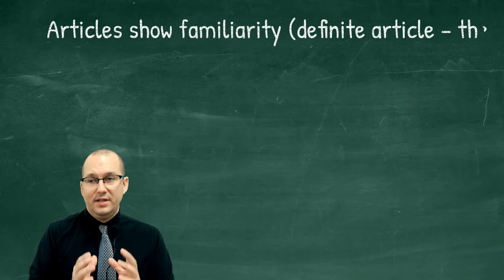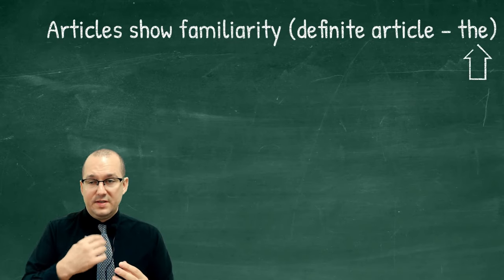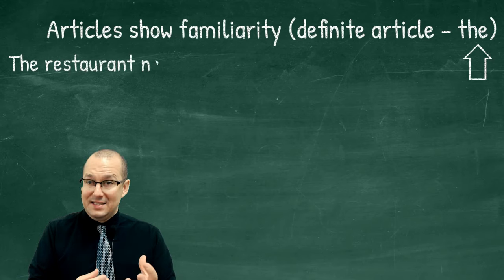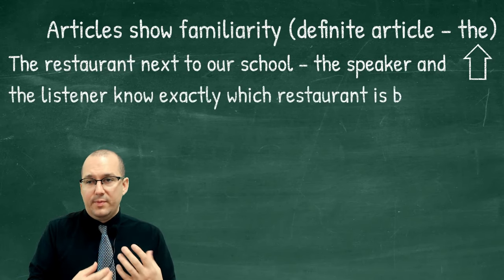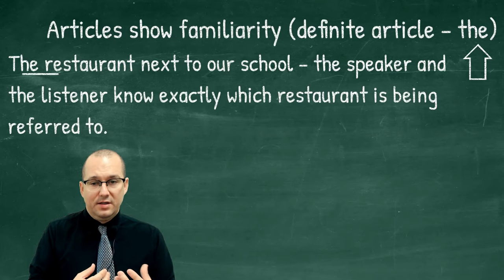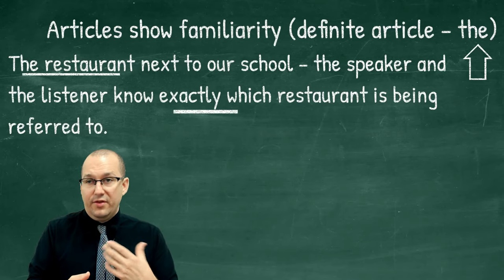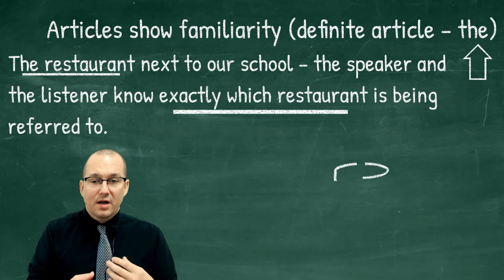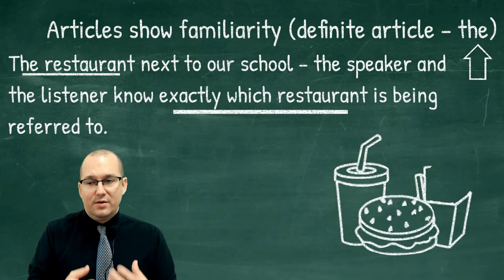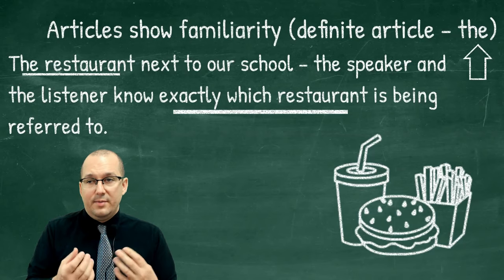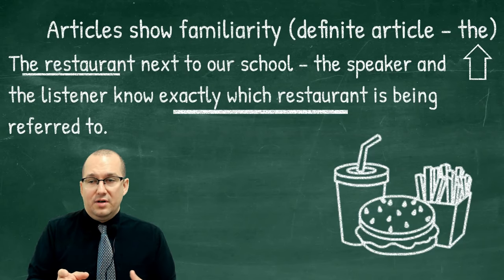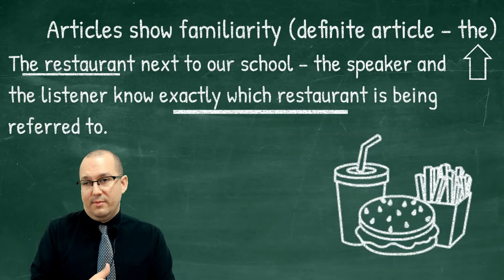Articles show familiarity — this means between the speaker and the listener, or the writer and the reader. It shows that both people know what is being talked about. For example: 'the restaurant next to our school.' The speaker and the listener know exactly which restaurant is being referred to. That's why we say 'the restaurant' — it shows that both of them understand.